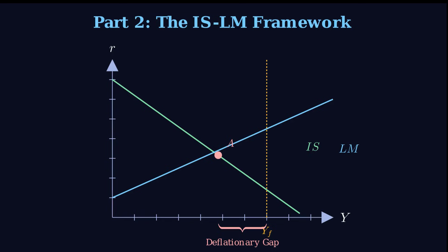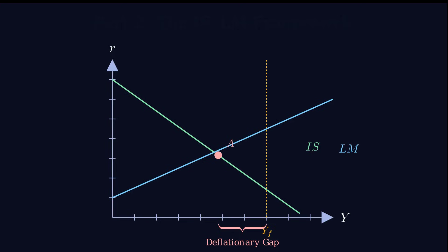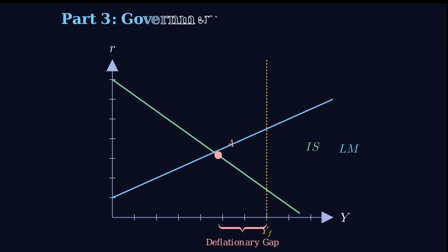The new equilibrium — we'll call it Point B — is immediately established at a point with a higher level of output Y and, crucially, a higher interest rate R. So output is up, which is what the government wanted — that's the win. But borrowing just got more expensive for everybody — that's the cost.